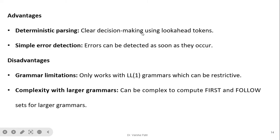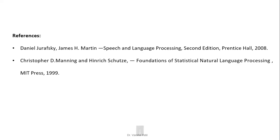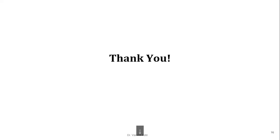Advantages of the predictive parser: deterministic parsing, clear decision making using look-ahead tokens, and simple error detection — errors can be detected as soon as they occur. Disadvantages: it only works with LL(1) grammars, which can be restrictive; the left derivation can be complex; and computing the first and follow sets for large grammars can be complex. These are the advantages and disadvantages. Thank you.